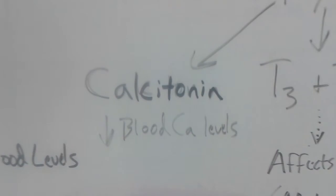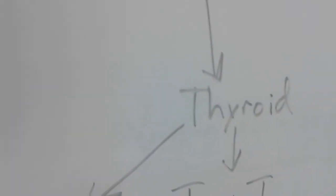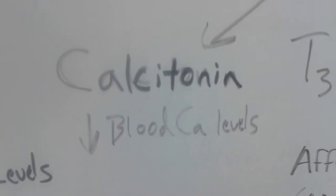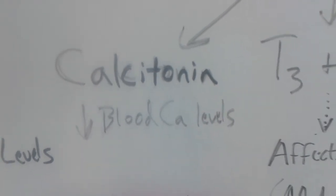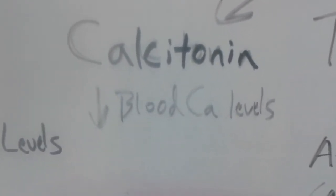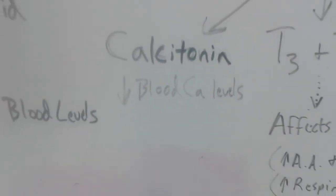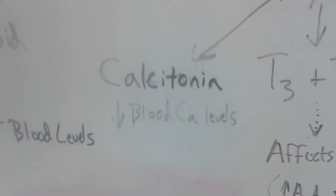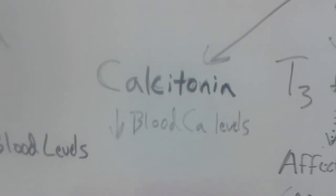Another hormone that we see produced by the thyroid gland is calcitonin. Calcitonin targets several different cells in the body including bone cells in order to reduce blood calcium levels. Calcitonin tones down blood calcium levels.